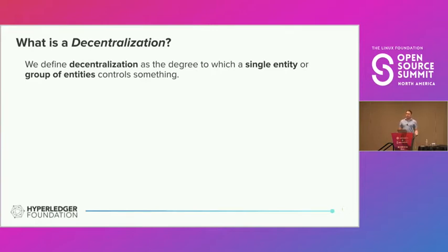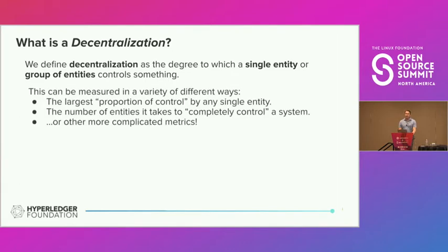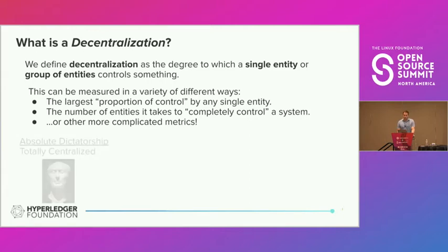If we're going to talk about decentralization, we obviously have to define it. We define decentralization as the degree to which a single entity or group of entities control something. You can measure this in a wide variety of ways — the largest proportion of control by any single entity, the number of entities it takes to completely control a system, or more complicated metrics like the Nakamoto coefficient.